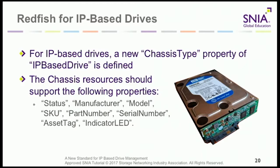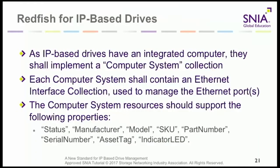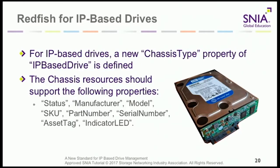The indicator light is the blue LED on the front — so you pull the right drive. The DMTF team did a great job; the only thing we asked them to change was the chassis-type identifier, so that when you list all chassis types across your data center, you can find IP drives by their chassis type. In a visual interface, they'd show with a different icon or different representation in the composite view.